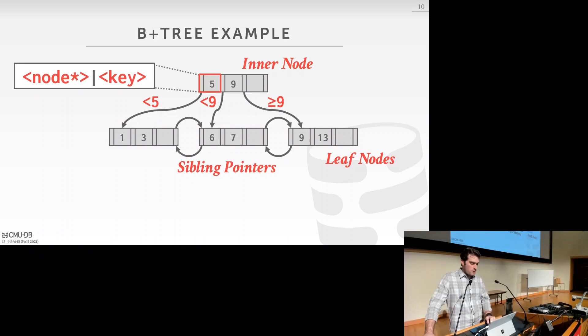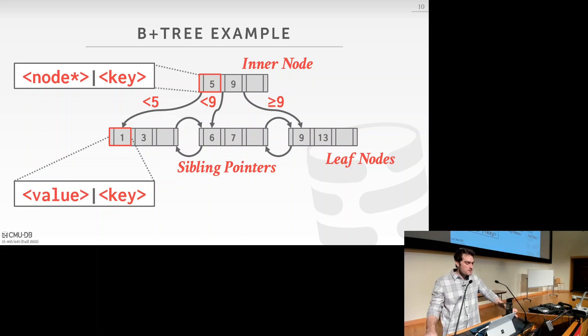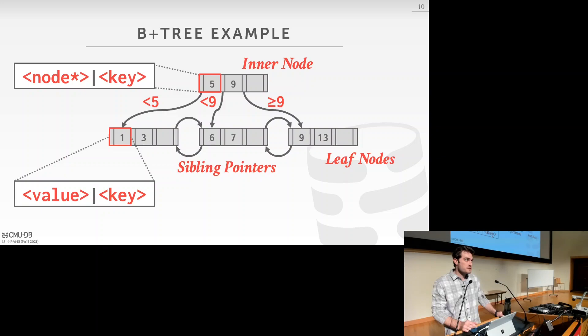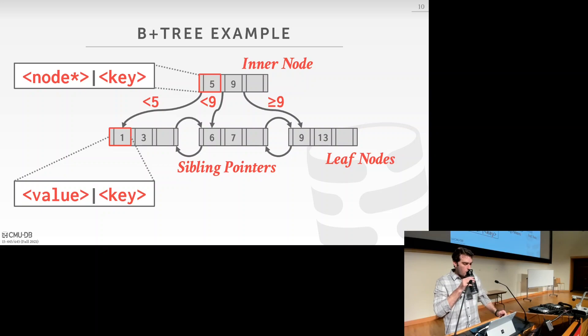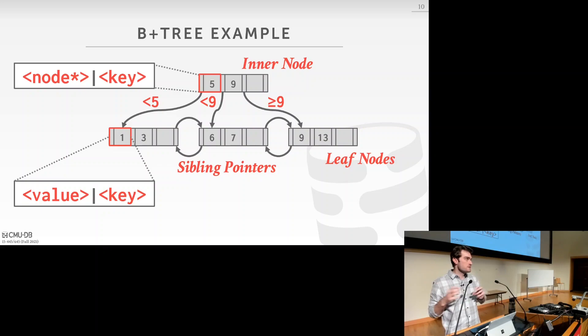At the leaf nodes we store the actual keys along with their values. In the inner nodes and root node we store keys and node pointers; at the leaf nodes we store keys along with their associated values. The space to the right in nodes is used for inserts — as you fill up, you may need to split nodes, and everything gets inserted in sorted left-to-right order.